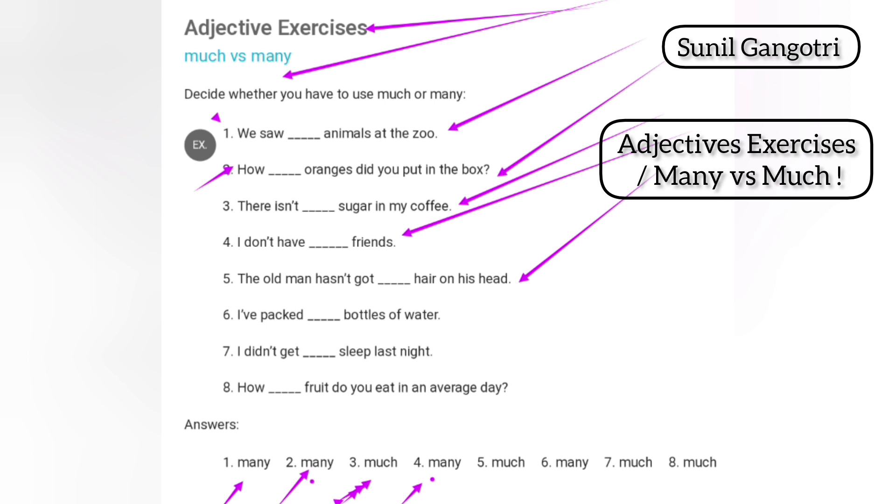The old man hasn't got blank hair on his head. Now is the correct answer much? Five. The old man hasn't got much hair on his head.